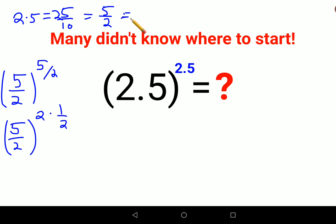This is an improper fraction, so we can write it as 2 and 1 by 2. We can split this, so it becomes 5 upon 2 the whole squared times 5 upon 2 the whole raised to half.